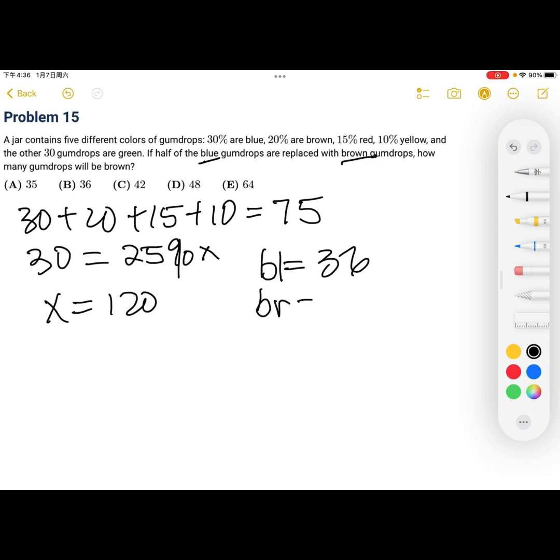All we have to do is figure those two out. 20% are brown, so 24 gumdrops are brown. So if we give half of 36 to 24, which half of 36 is 18, so we're going to add 18 to 24. That means 24 plus 18 equals 42, which is C.